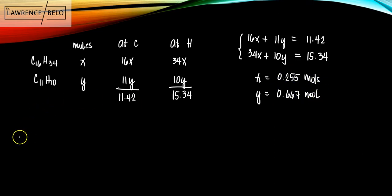So now let's create another table. So C16H34, C11H10. Now that we know the number of moles, this is 0.255, this is 0.667. We can have the molecular weight. The molecular weight of cetane is 226, whereas that of the methyl naphthalene is 142.